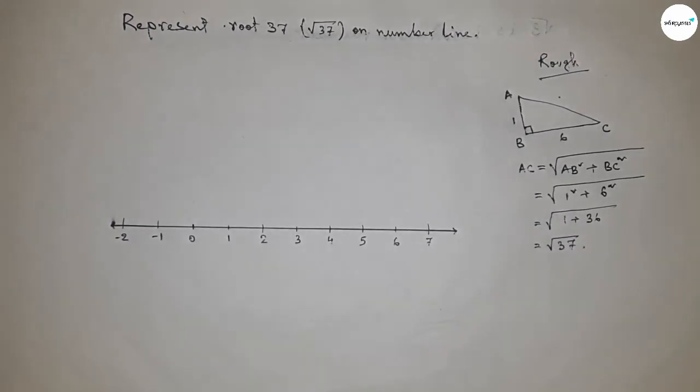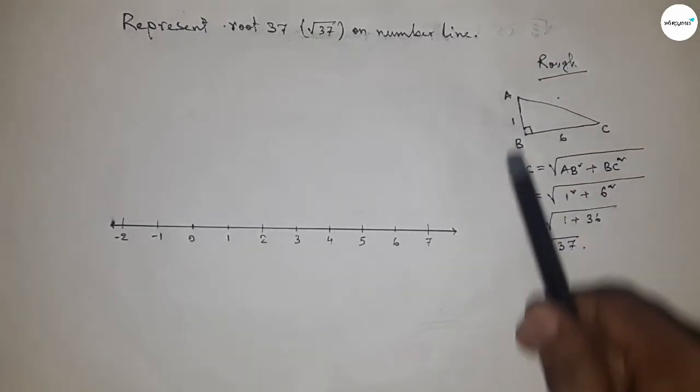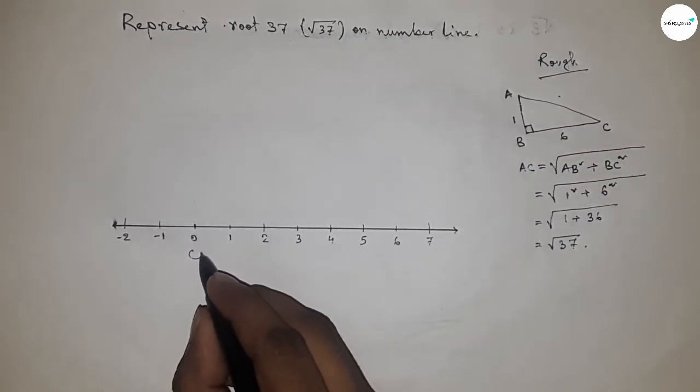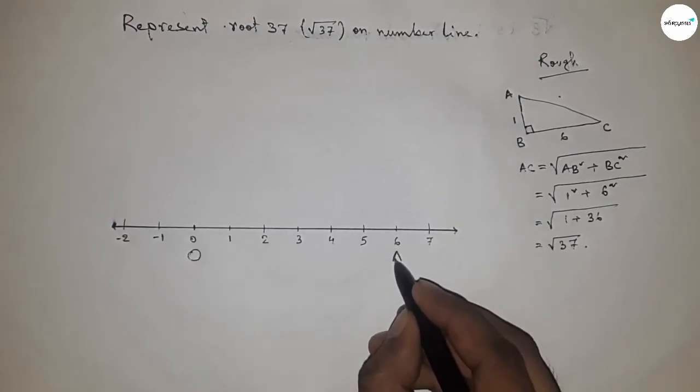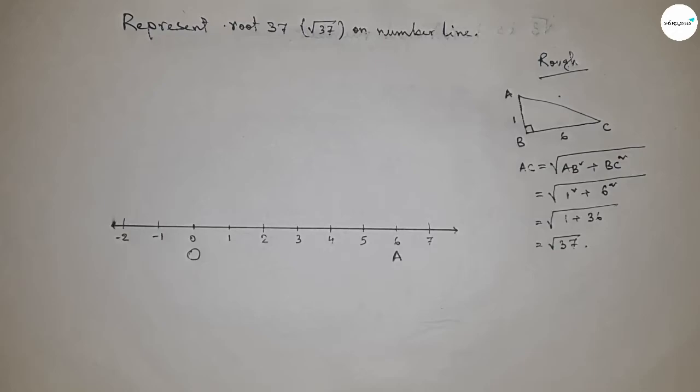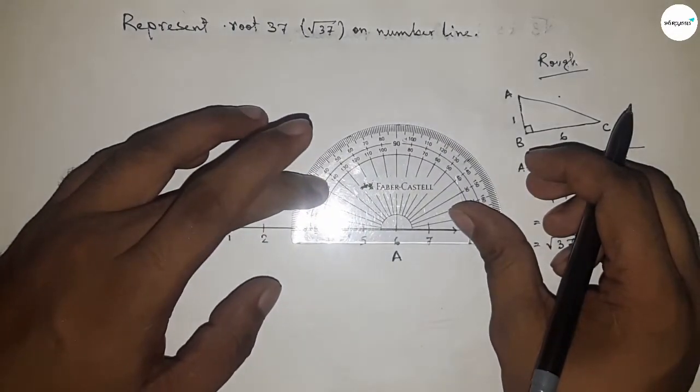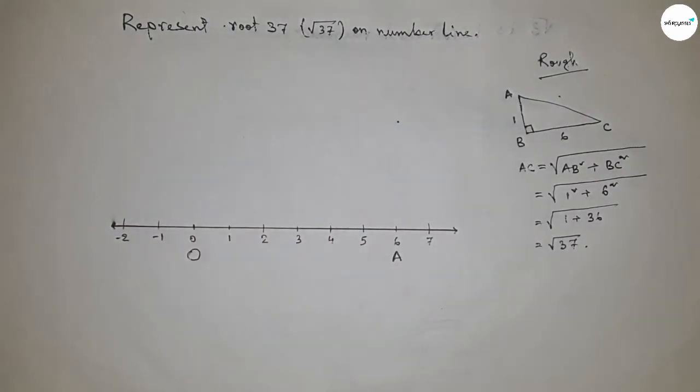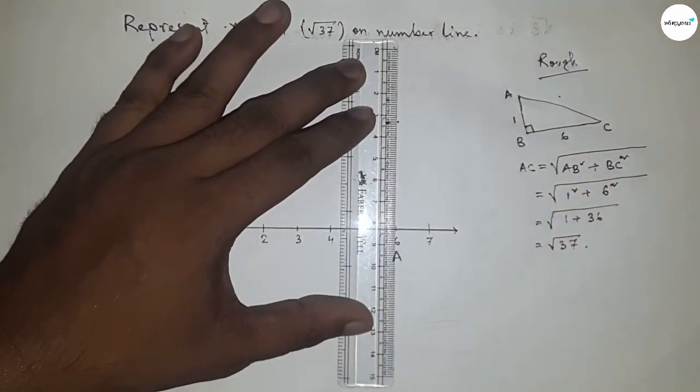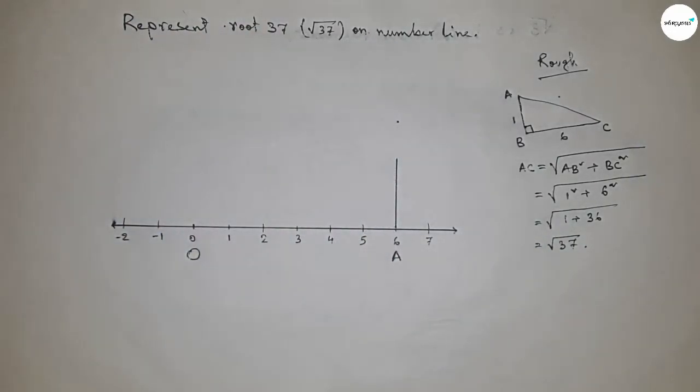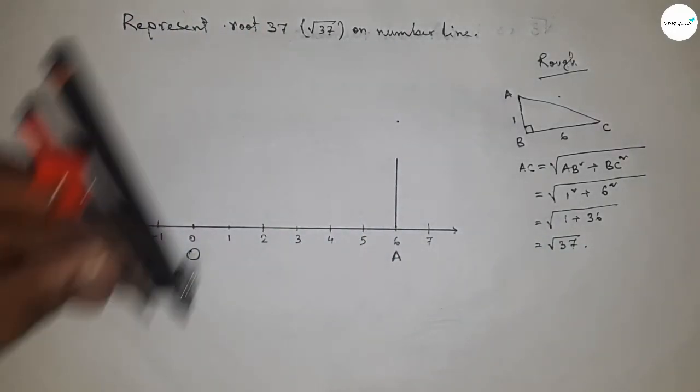This equals √37 units. Now we'll apply this concept between 0 and 6. First mark the zero point and A point. Now draw a 90-degree angle at point A using a protractor, then take the length between any two numbers with the compass.